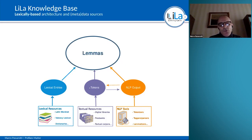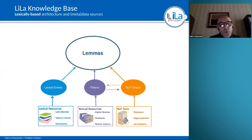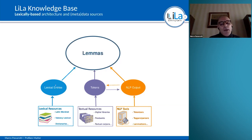You see a double arrow here because the output of an NLP tool like a tokenizer are the tokens which, on the other side, are the input of other NLP tools — like for instance a part-of-speech tagger. In the LILA architecture, all these components interact by pointing to lemmas, so you can search all distributed textual resources for occurrences of the same lemma.